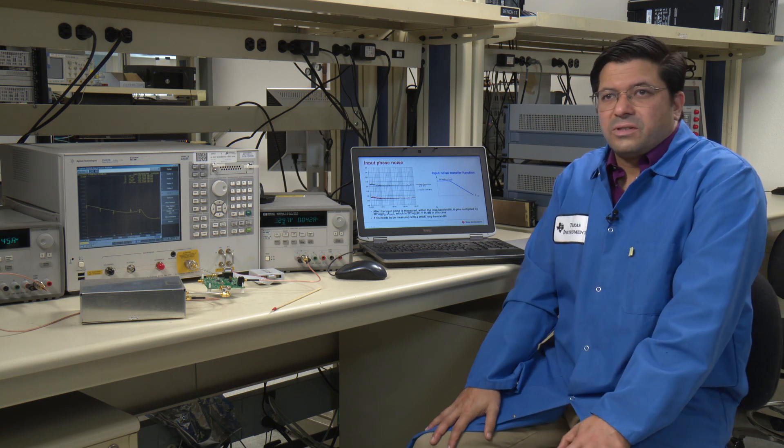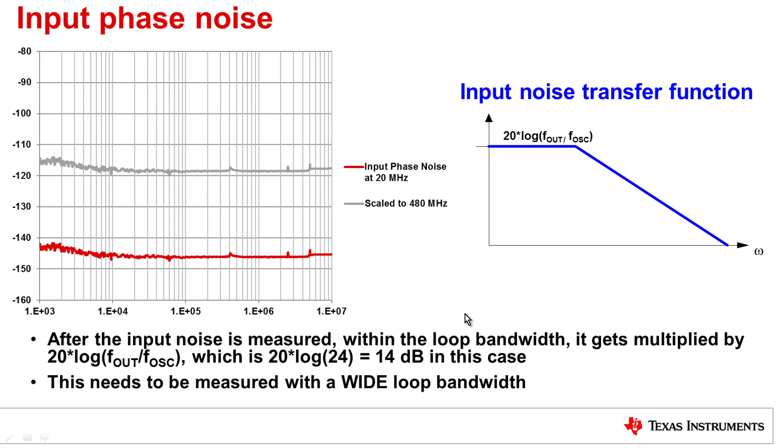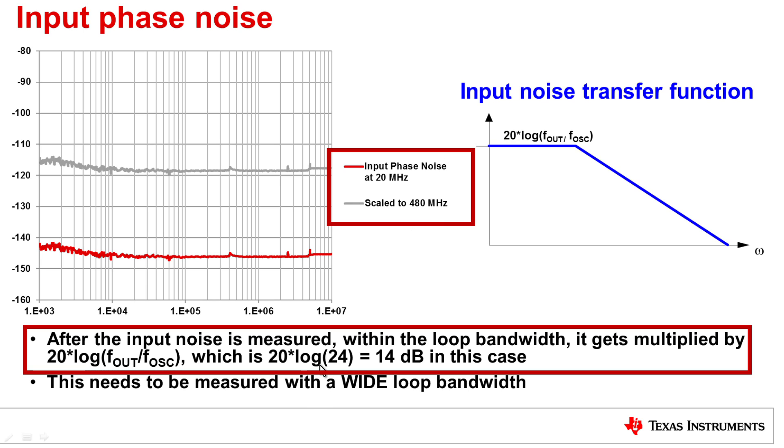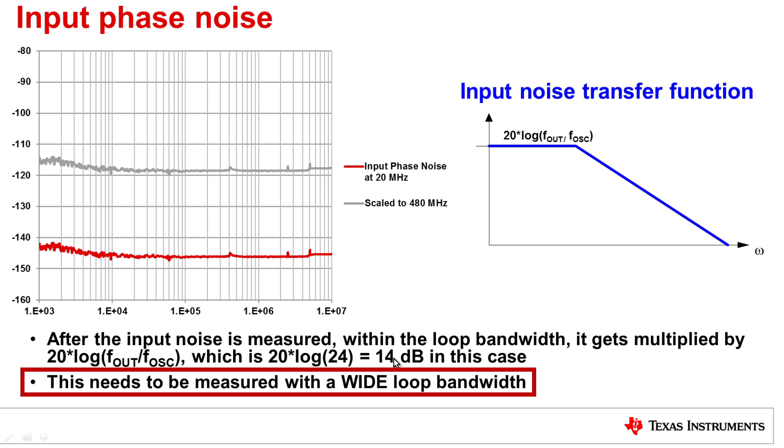The second noise source, input phase noise, comes from the input. And the critical thing to remember is this noise is scaled from whatever input frequency to the output frequency. So for instance, in this case, if I have a 20 megahertz input frequency and a 480 megahertz output frequency, this noise is measured by 20 log of 24 or 14 dB increase in the phase noise. So if you have a wide loop bandwidth, this noise is going to go straight through.